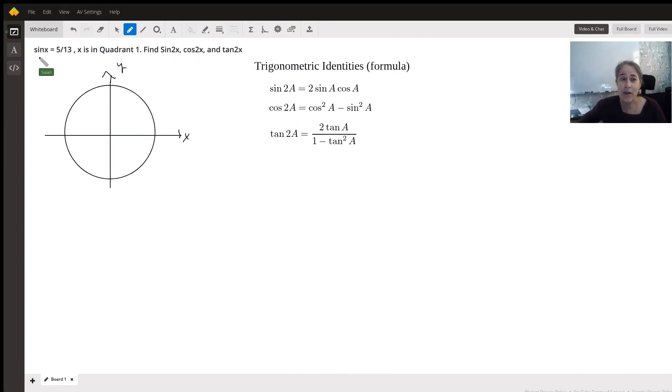First of all, you are given sine 5/13, but they don't want you to find the sine of x. They want you to find the sine of 2x. And when there is a 2 next to the x after that trig function, you can't just pull out a 2. You have to use these trig identities.